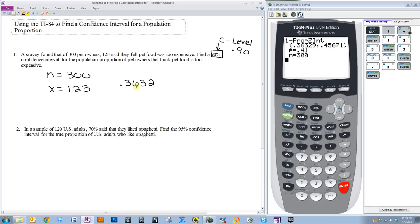So, we'd say .36329 is less than P, because P stands for population proportion, which is less than .45671.